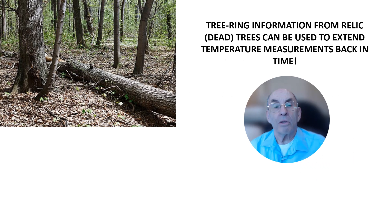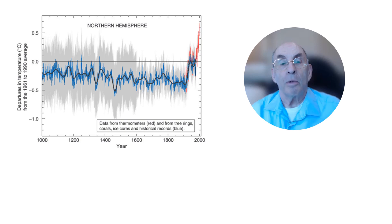Most trees live less than 1,000 years, but climate scientists would like temperature information that extends much further back in time. Fortunately, they can often find well-preserved older dead trees in the same area as living trees they are studying. By matching the tree ring patterns from these nearby relic or dead trees, scientists have been able to obtain temperature information extending back several thousand years. This image shows a typical temperature reconstruction obtained by matching tree ring and other proxy temperature data to actual thermometer measurements. While the thermometer data goes back only a little over 100 years, the proxy data in the figure goes back a full thousand years, clearly showing how temperatures have increased since the start of the industrial revolution.